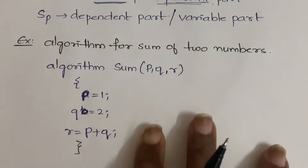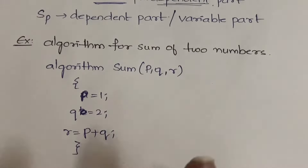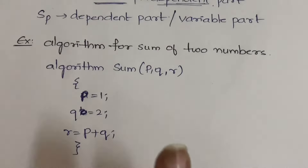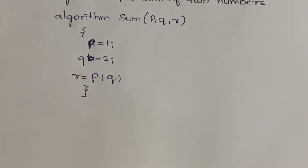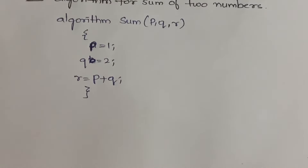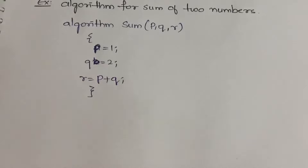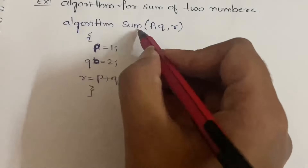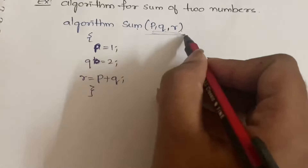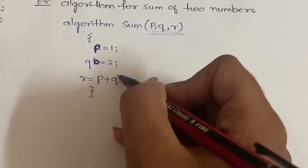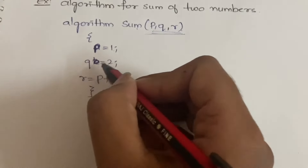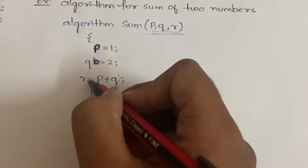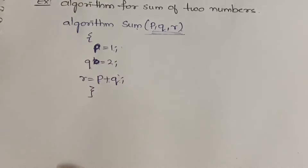Now let us see an algorithm for calculating the sum of two numbers. You already know the algorithm, but your task here is to calculate the space complexity of this algorithm. The algorithm is sum(p, q, r). p, q, r are the variables involved. p has the value 1, q has the value 2, and r has the value p plus q.